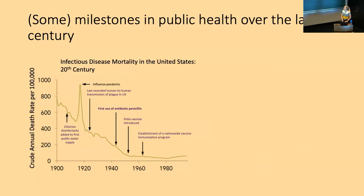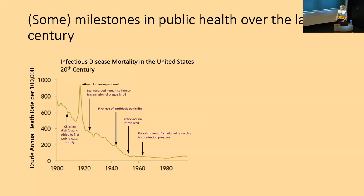Looking at major milestones in public health over the last century, one that really stands out is the first use of the antibiotic penicillin. Looking at the crude annual death rate from data in the United States, key points include the introduction of chlorine disinfectants into public water supplies, the last recorded human-to-human transmission of plague in the US, the first use of penicillin in the 1940s which was widely used afterwards, and the introduction of nationwide vaccine programs.